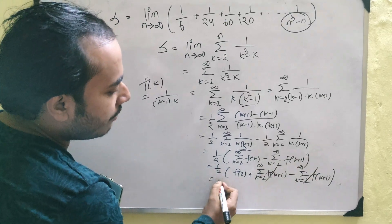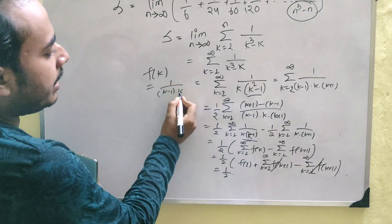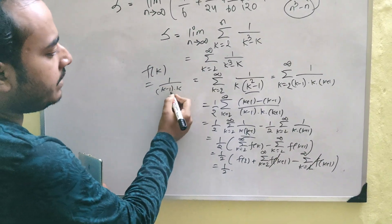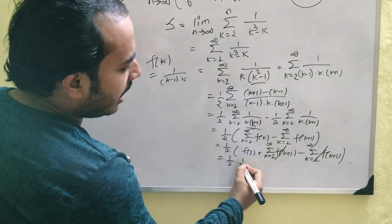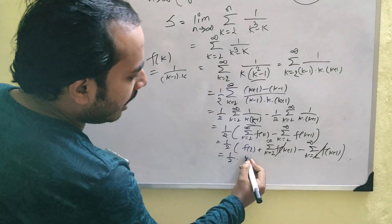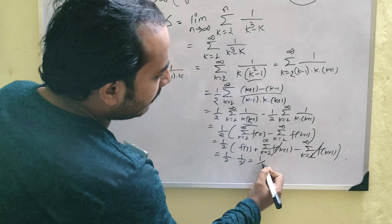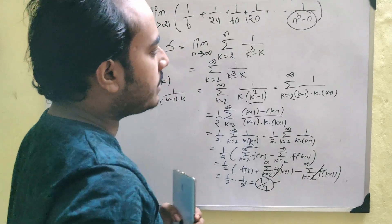and you are left with half of f2 and what is f2? f2 is 2 into 2 minus 1. This is 1 by 2. So, half into half, this gives you a 1 by 4. That is your required answer for the limit.